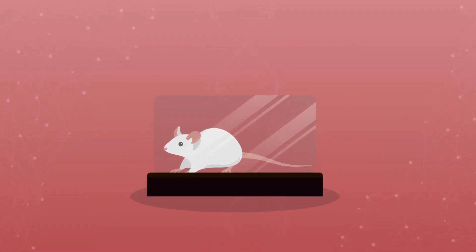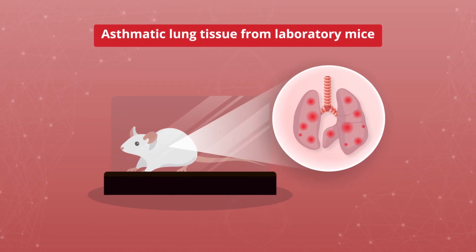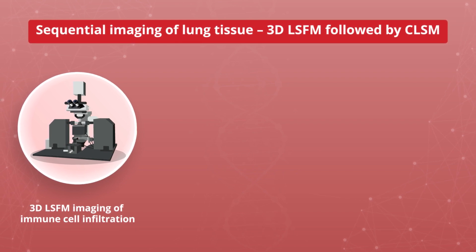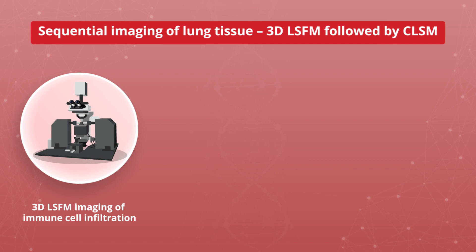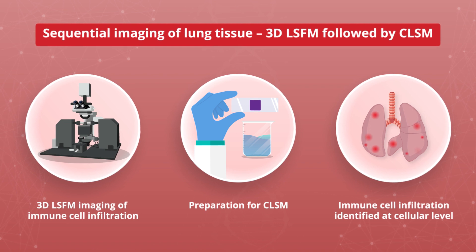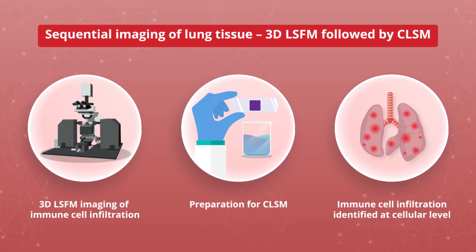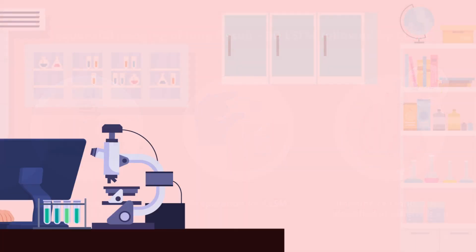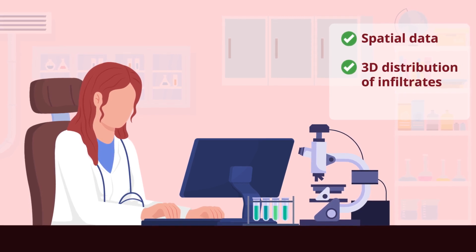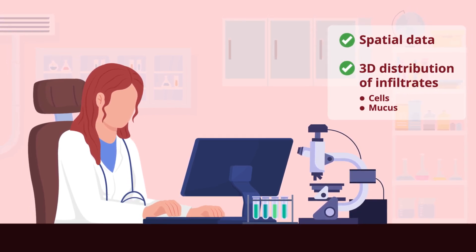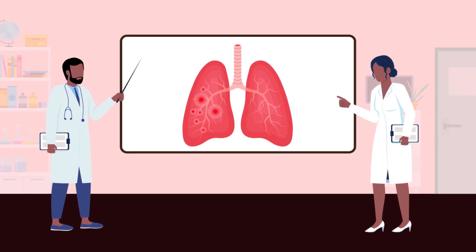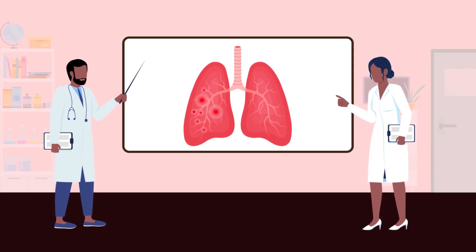The researchers demonstrated the utility of this approach using asthmatic lung tissue from lab mice. They used LSFM to obtain images of immune infiltrate accumulation within the lung tissue, followed by a suitable preparation step for CLSM imaging, which allowed clear identification of immune cells that had infiltrated the lungs at a cellular resolution. This pipeline provides comprehensive spatial data with three-dimensional distribution information of the infiltrates — both cells and mucus — in the asthmatic mouse lung. Such multi-resolution fluorescence imaging could open avenues for a better understanding and diagnosis of all inflammatory lung diseases.